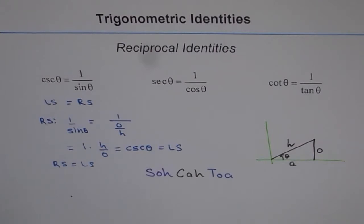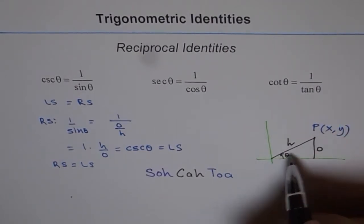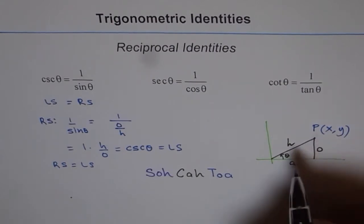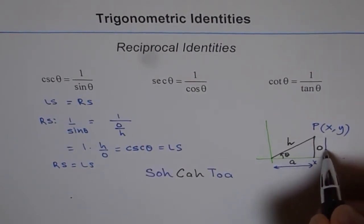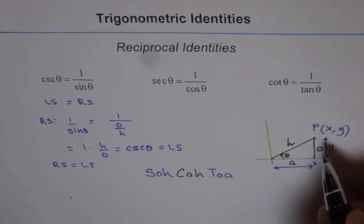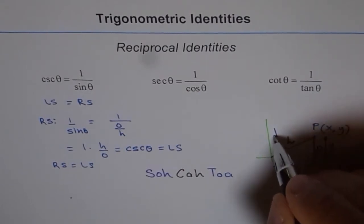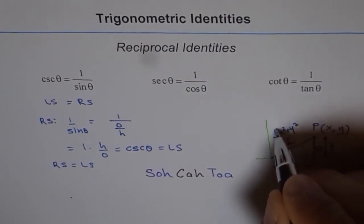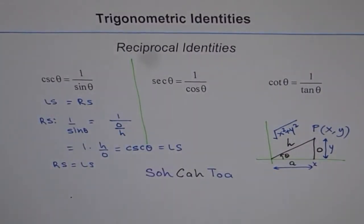Now I'll use the coordinate system. Let point P be (x, y). Then x is the horizontal distance and y is the vertical distance. Let h be our hypotenuse, where h equals the square root of x² + y². This allows us to prove the reciprocal identities using coordinates.